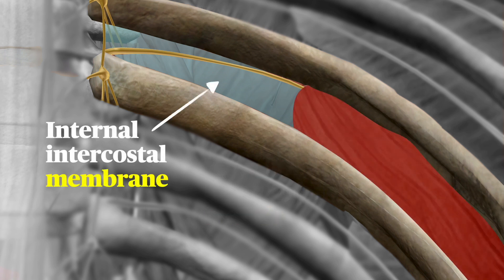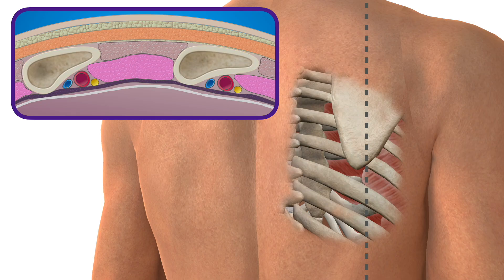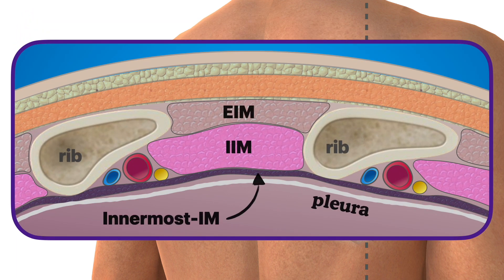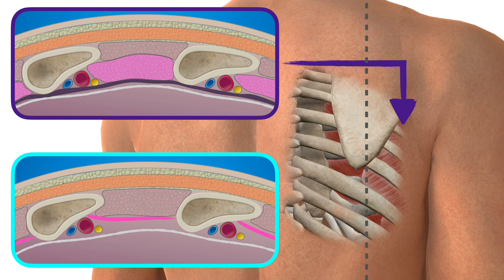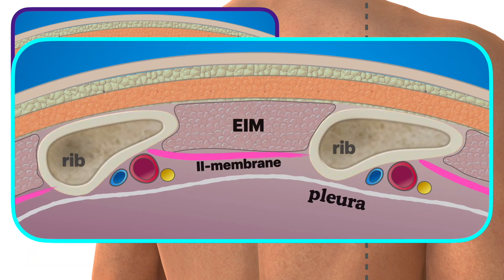Deep to the nerve on the lateral chest is another muscle: the innermost intercostal muscle. There is no membrane associated with this, so at the medial aspect the nerve is directly adjacent to the pleura. Lateral to the angle of the rib we see external and internal intercostal muscle, the neurovascular bundle, and the innermost muscle. Medial to the angle of the rib, we lose the internal and innermost muscles, leaving only the external intercostal muscle and the internal intercostal membrane.